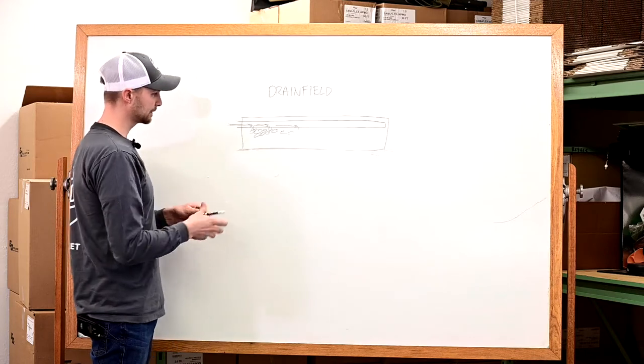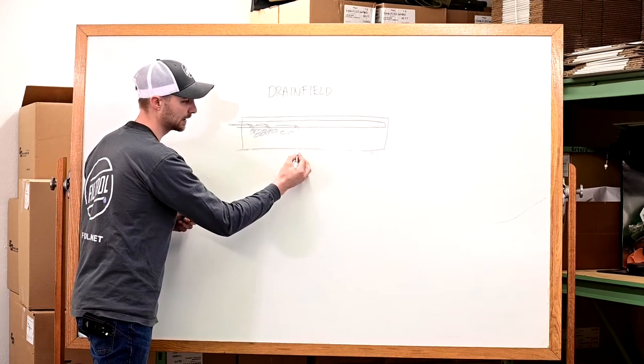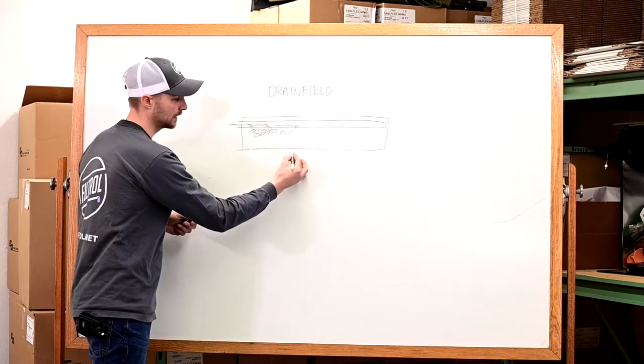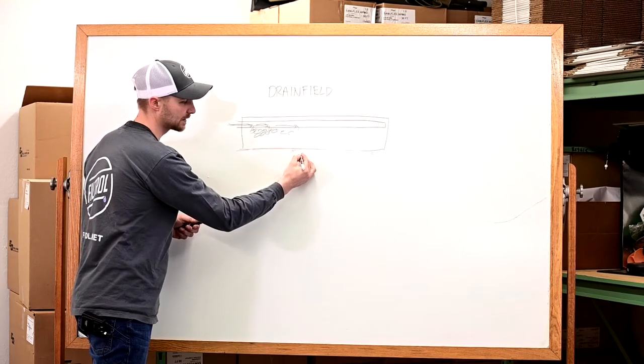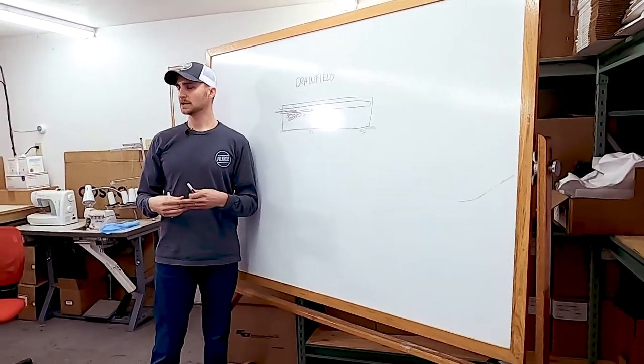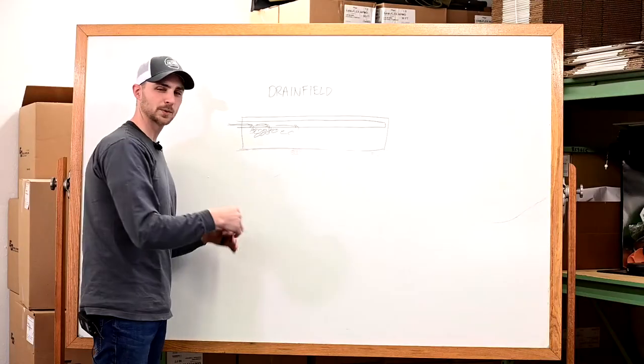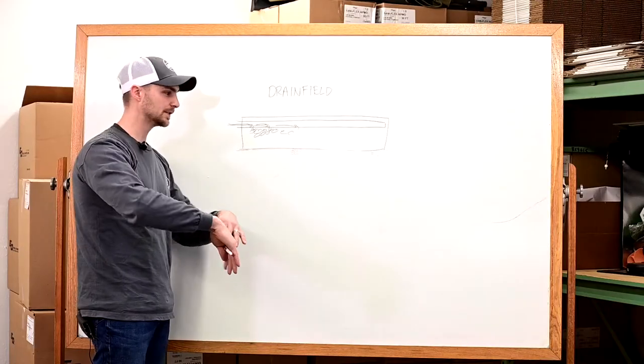What ends up happening is as that wastewater flows through the pipes, through the rock, it hits the native soil interface. The native soil typically has small pores. Sand has larger pores so it moves the soil quickly. Clay has smaller pores so it slows it down. But either way, there's pores in the soil where water can infiltrate down through it.